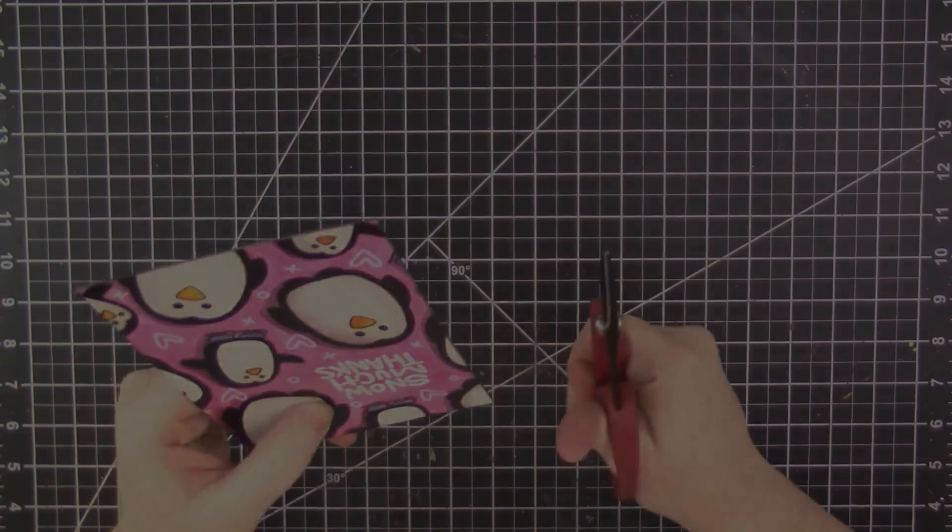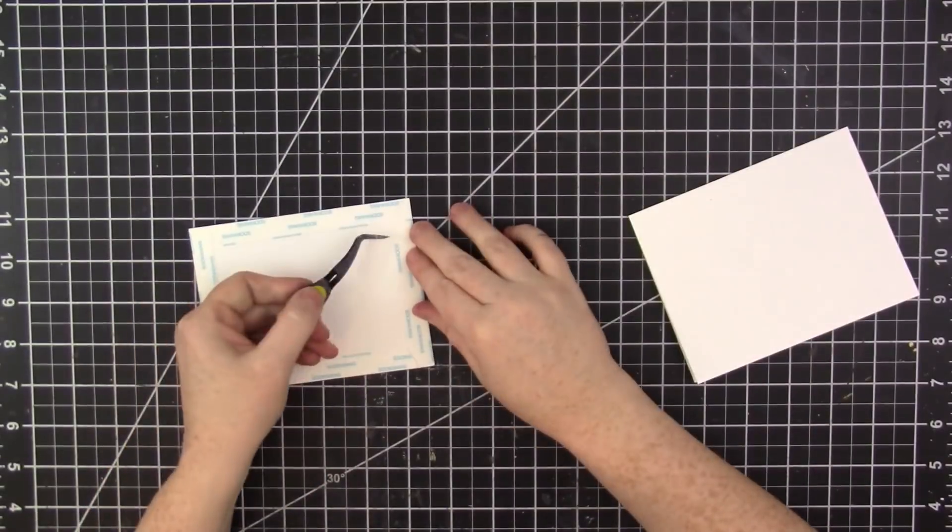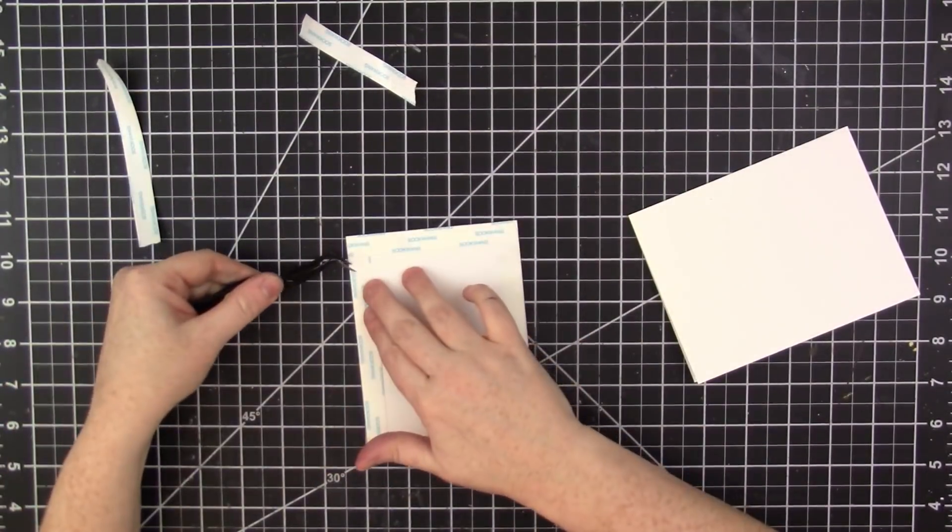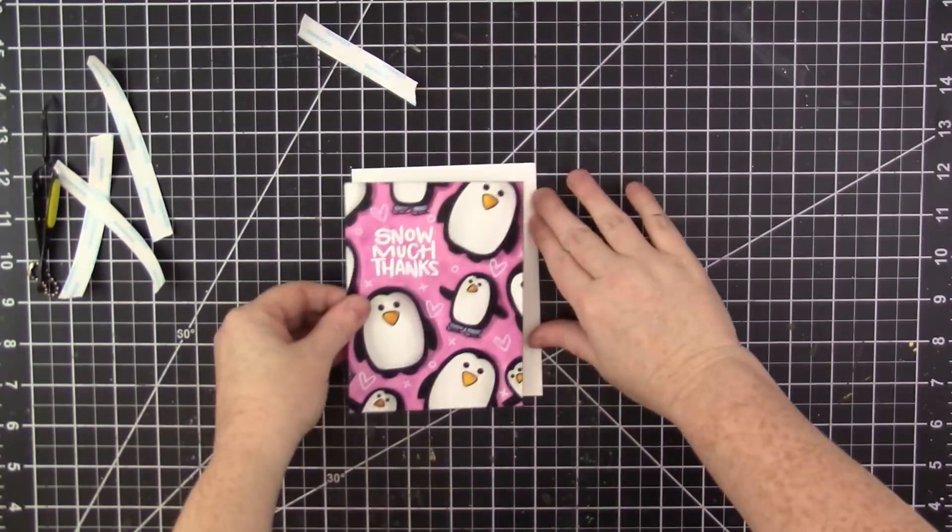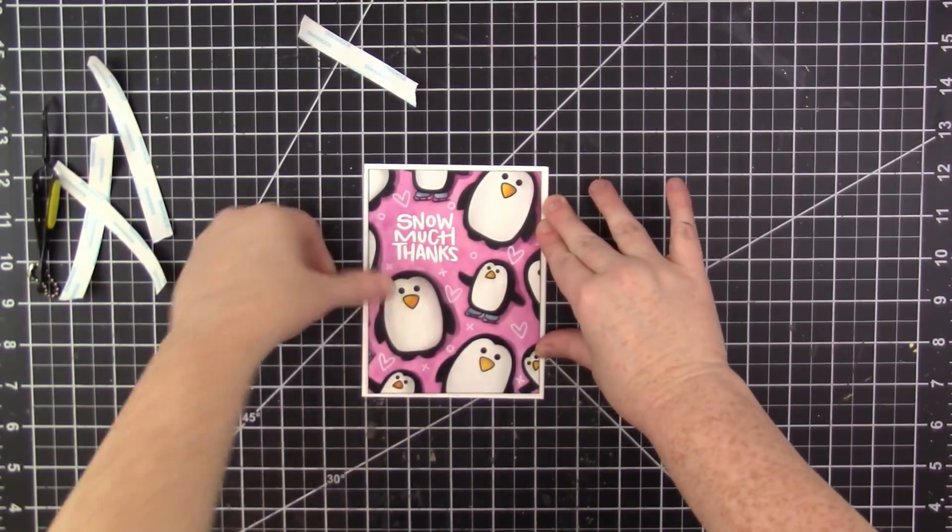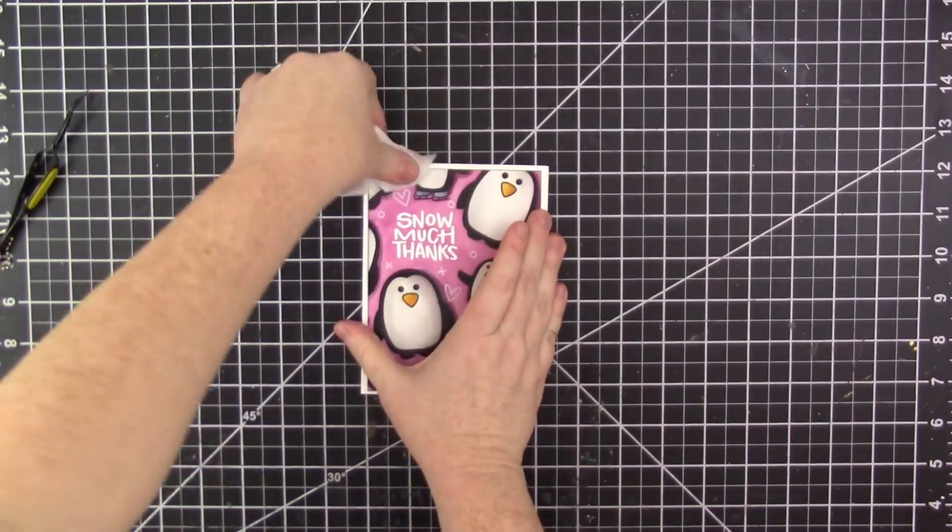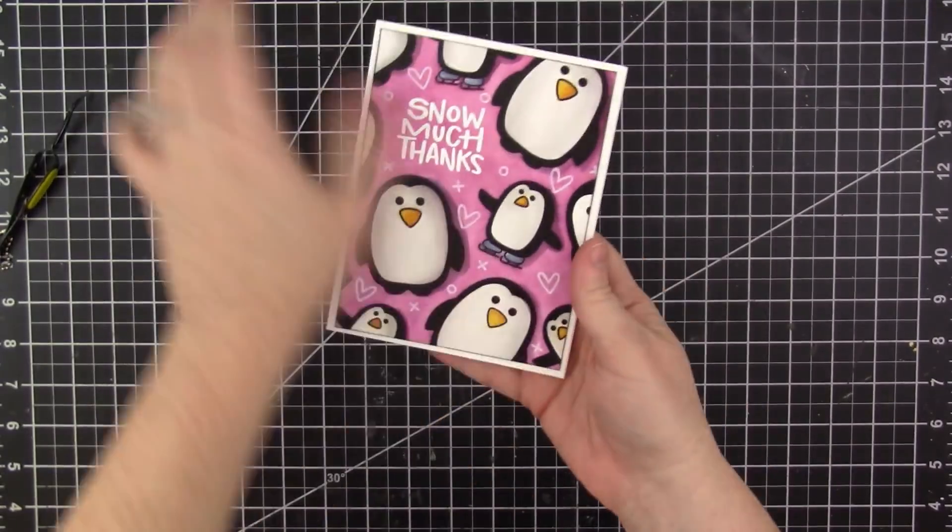It just cost a few dollars and having them already cut is so convenient. And for a normal card, I probably would have just used a tape runner to adhere the front panel, but because I was using such a thick cardstock, I decided to use score tape. And the score tape is just a little bit stronger. The tape runner probably would have been fine, but it just gives me peace of mind knowing that I'm using a stronger adhesive.